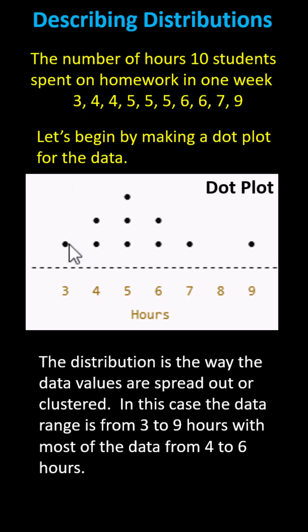Because there's one 3, there's one dot above the 3. Because there are two 4s, there's two dots above the 4, and so on. Notice we include any missing values as well. There is no 8 in the data set, but we still list the 8 along the number line on the horizontal axis.